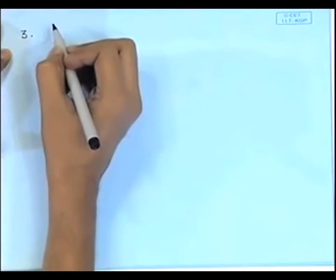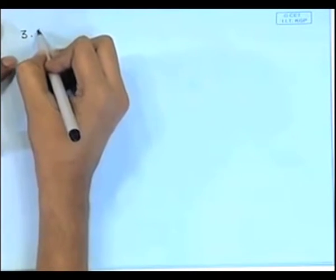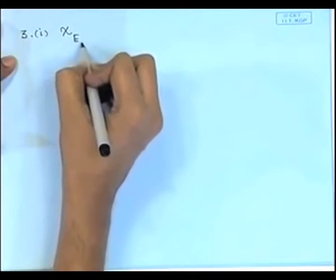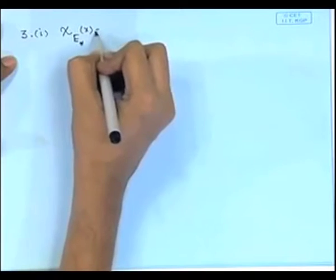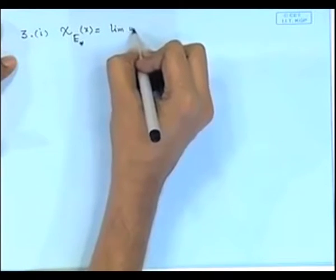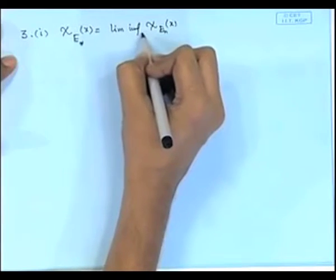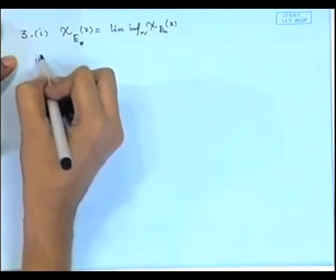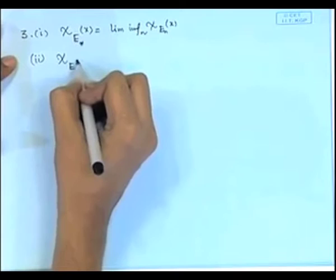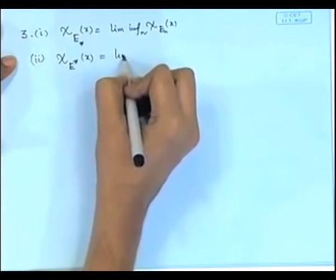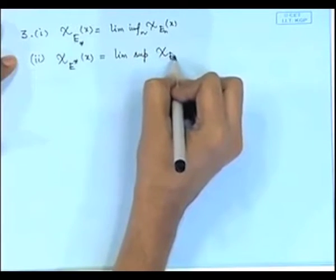In a similar way, we can prove statement 2. There are certain relations which include the characteristic functions of the limit superior and limit inferior. The indicator function of the limit inferior of a sequence of sets is the limit infimum of the indicator functions of the sequence of sets. Similarly, the indicator function of the limit superior equals the limit superior of the indicator functions of the sequence of sets.